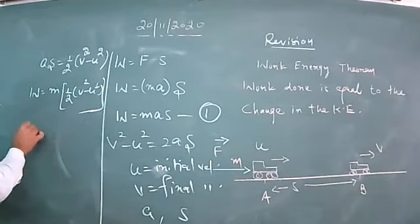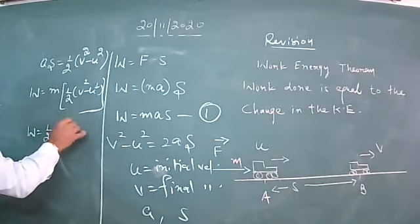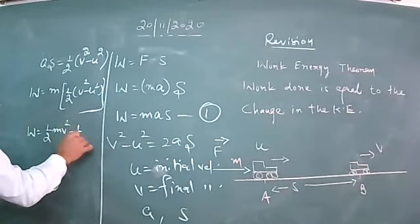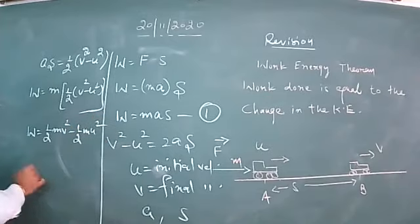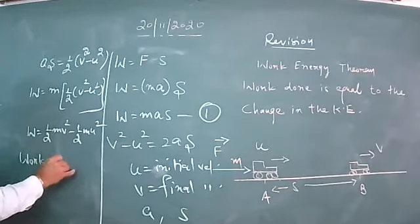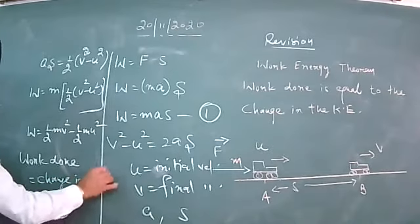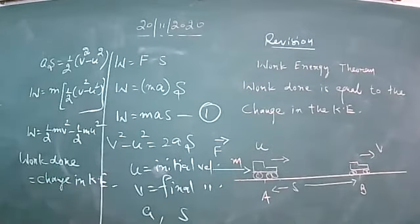Taking m into the bracket, this gives one-half m v squared minus one-half m u squared, or we simply say that work done is equal to the change in kinetic energy. This is our work-energy theorem.